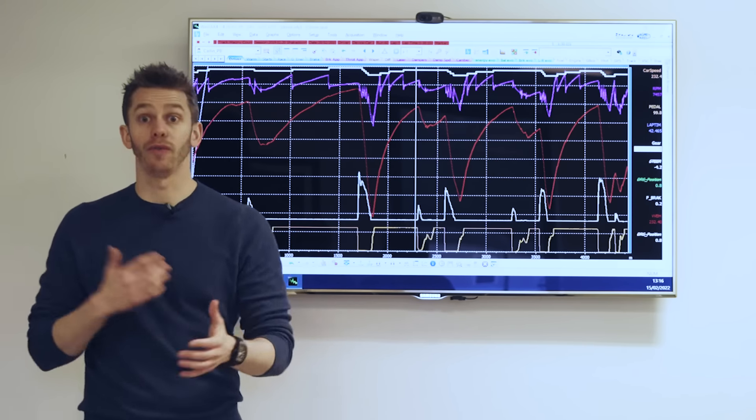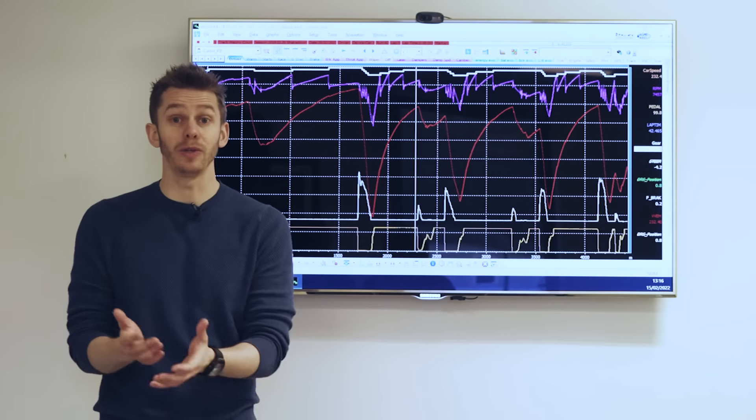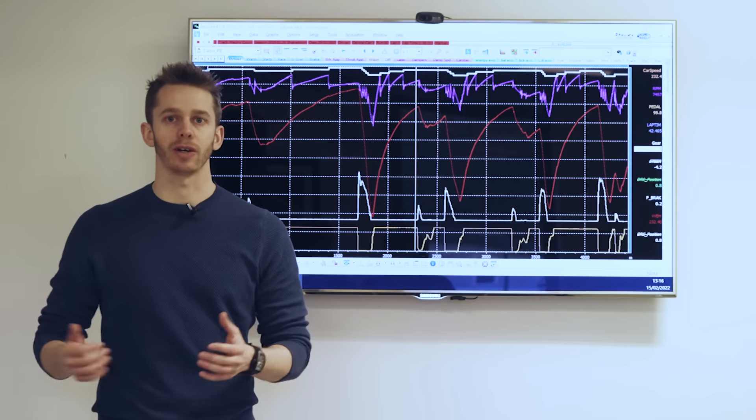When you've isolated the area you're faster or slower than your teammate, whose data you have available being across the garage from you, you can then take a look at the other parameters.